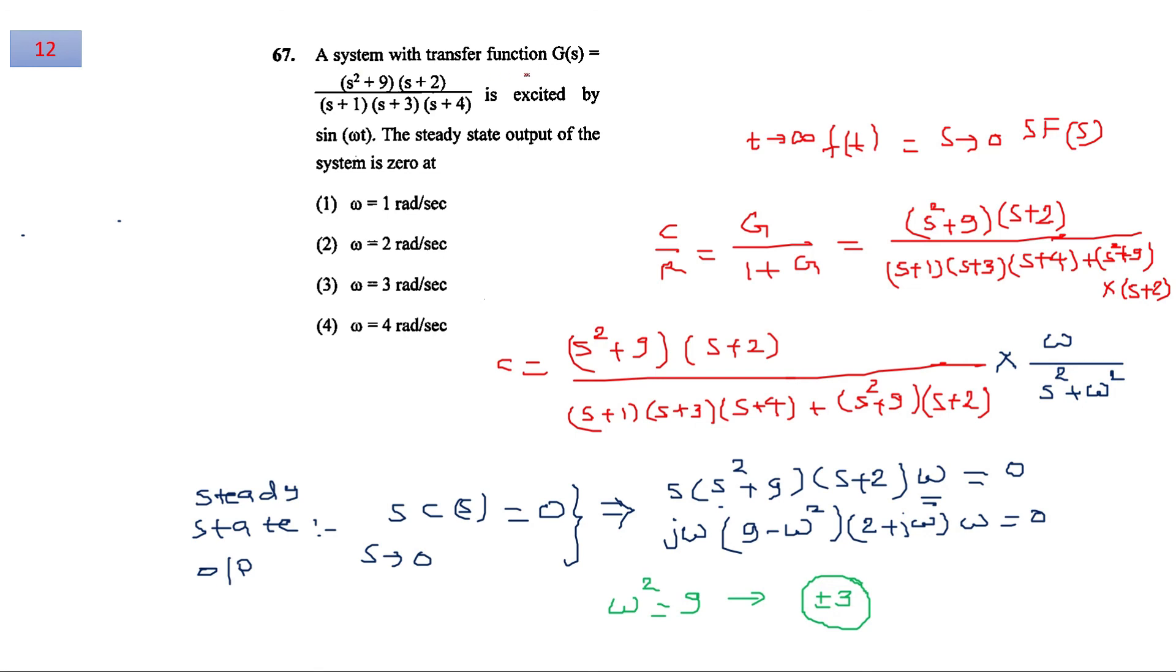For question number 12, the transfer function of system is given. Input given is sine and we have to find the steady state output. By steady state using final value theorem, you can observe that when time is tending towards infinity, s will be tending towards 0, and it will be s F(s). The transfer function of system can be obtained using the closed loop canonical basic form: G(s) over 1 plus G(s) H(s), putting the values where H(s) is 1. You will obtain this output c. For sine omega t, the transfer function in Laplace domain will be omega over s upon s square plus omega square. Now solving for this and putting s tends to 0, this will result in omega square equal to 9. So considering frequency plus 3, this will be 3 radians per second.